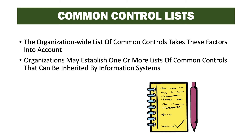When common controls are developed, it's important to list them and determine who is responsible and which controls can be inherited. The organization-wide list of common controls takes these factors into account. Organizations may establish one or more lists of common controls that can be inherited by information systems, and the list will include not only who is responsible for the control, but in what areas or what systems can inherit those controls. So it would be important for a system owner in Washington, D.C. to ensure they're inheriting physical security controls from the control provider in Washington, D.C., not the control provider in Los Angeles, California.